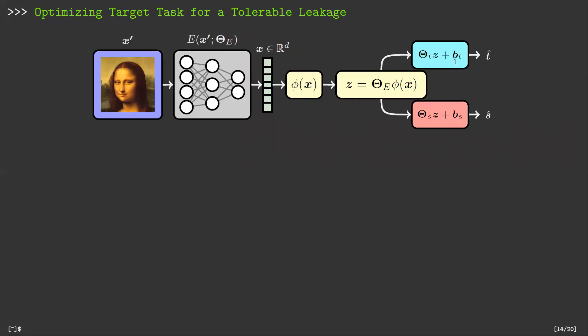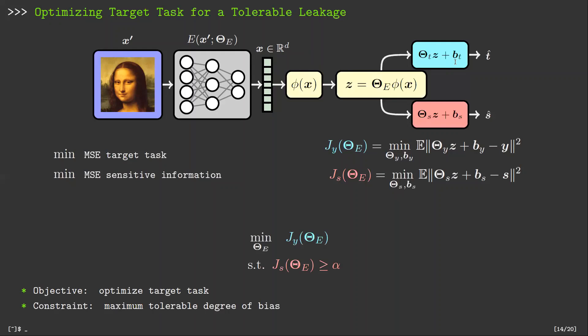This approach enables us to obtain the MSE of target and adversary in a closed form as a function of encoder parameters and input data. Then, we try to find the best encoder which minimizes the target MSE for a given maximum tolerable degree of leakage or bias.